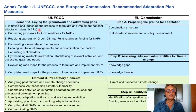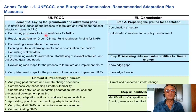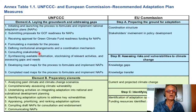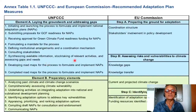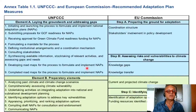UNFCCC Element A — laying the groundwork and addressing gaps — includes: initiating and launching the process to formulate and implement national adaptation plans; submitting proposals to and receiving approval for Green Climate Fund readiness funding for NAPs; formulating a mandate for the process, including stakeholder consultations; defining institutional arrangements and a coordination mechanism; consulting stakeholders; synthesizing available information; stock-taking of relevant activities and assessing gaps and needs; and developing and completing roadmaps for the NAP process.